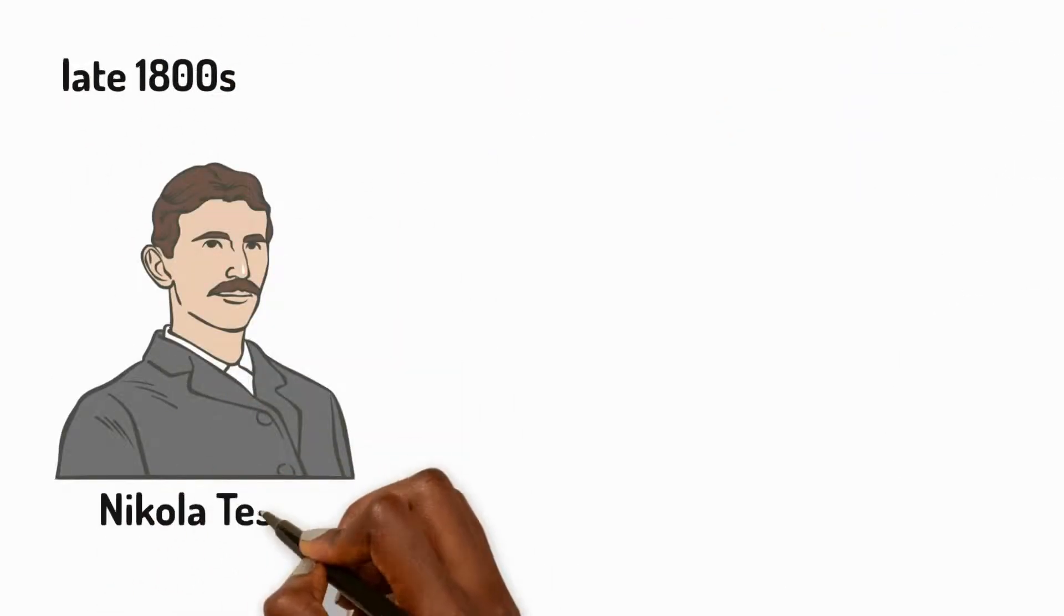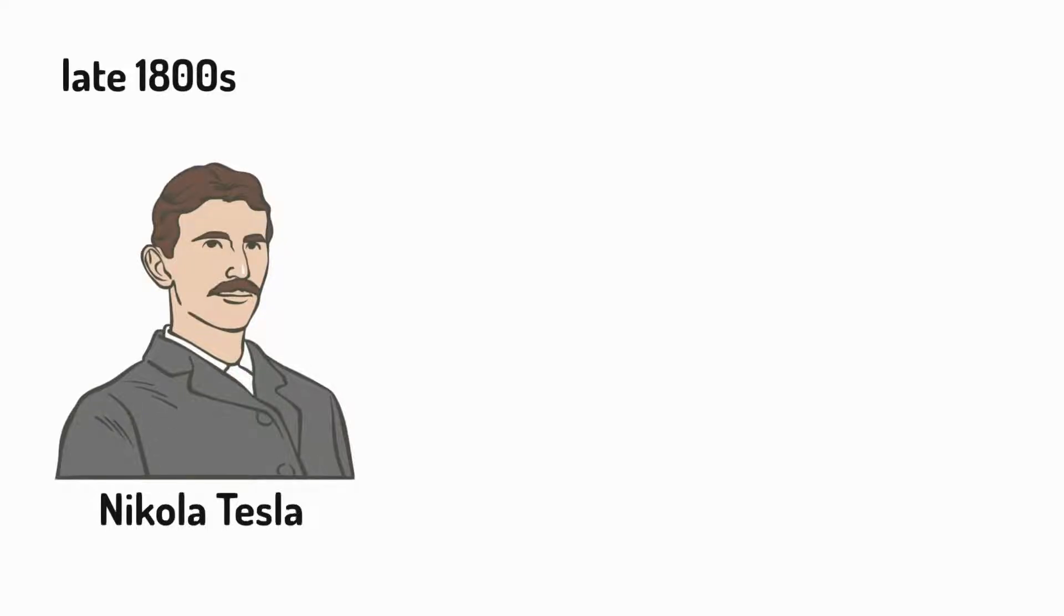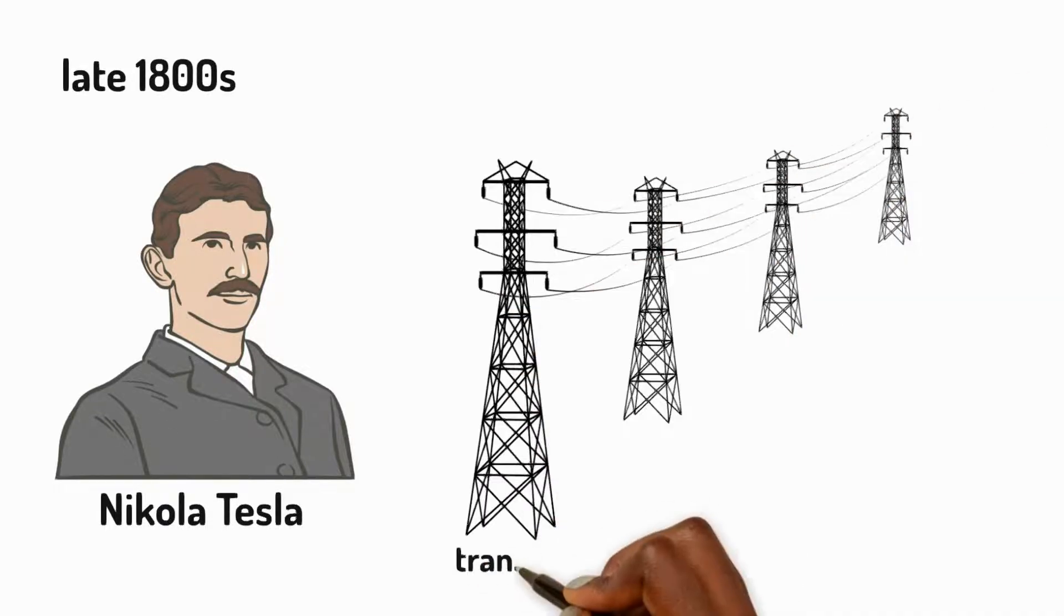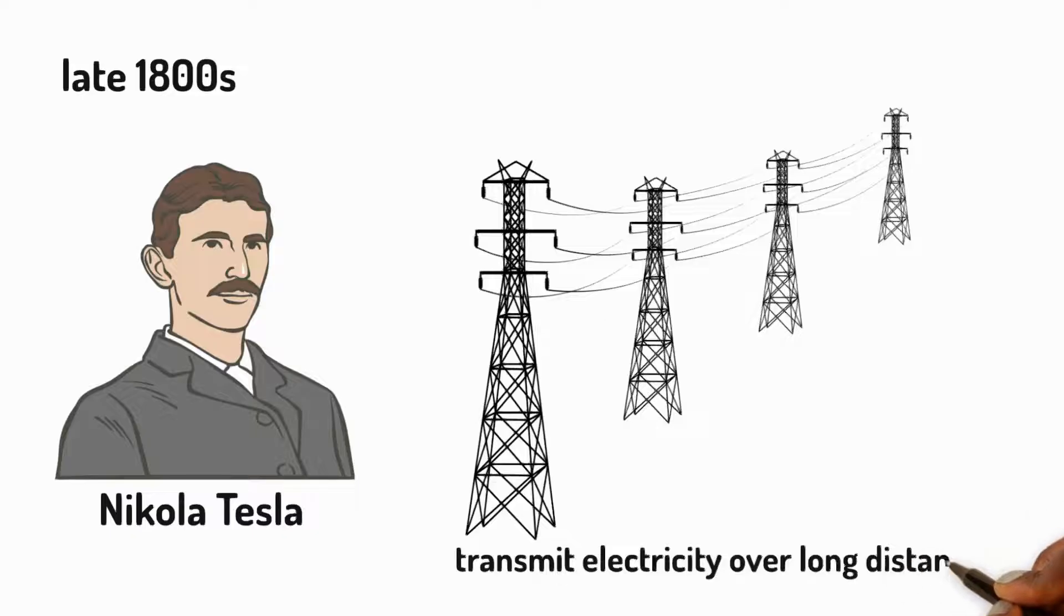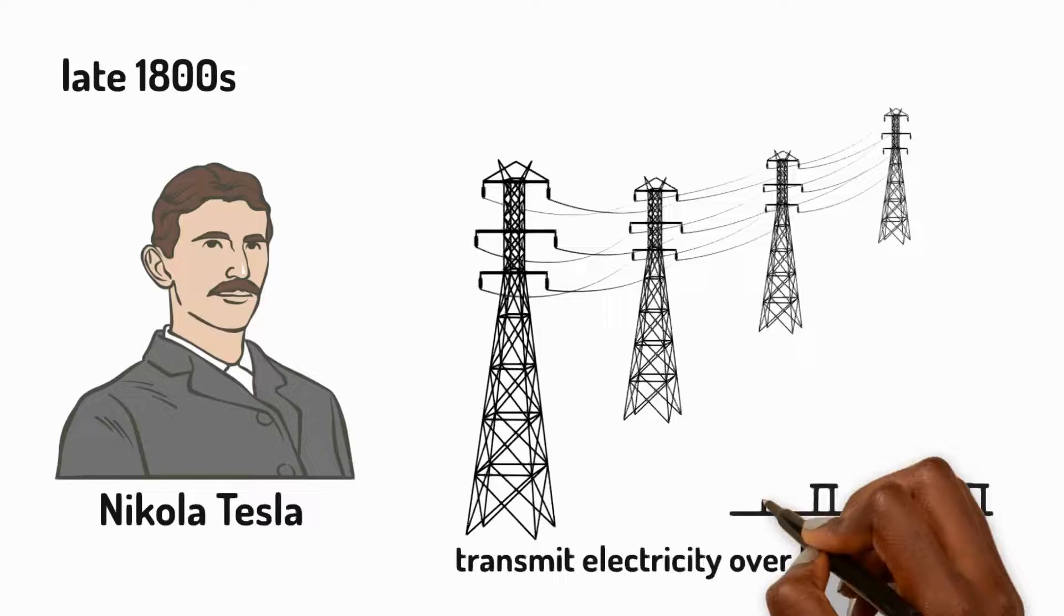In the late 1800s, Nikola Tesla, a Serbian scientist, developed ways to transmit electricity over long distances. And this allowed widespread electricity distribution to people's homes and businesses.